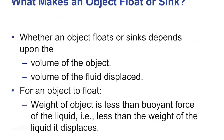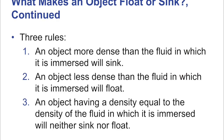The three rules for what makes an object float or sink: first, an object more dense than the fluid in which it is immersed will sink. Second, an object less dense than the fluid will float. Third, an object having density equal to the fluid will neither sink nor float — that's neutral buoyancy, remaining at whatever level it's at. Two solid blocks of identical size submerged in water — one lead and one aluminum — experience the same buoyant force, because they're the same size so they displace the same volume, giving the same buoyant force.